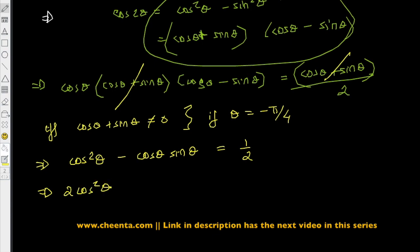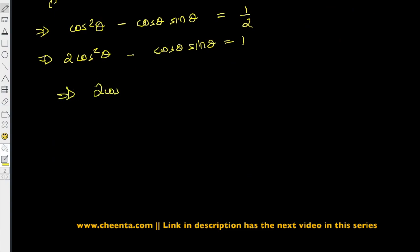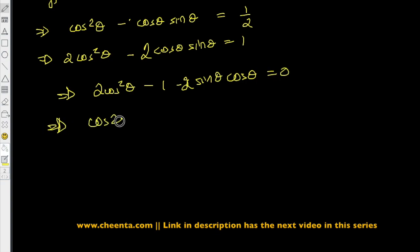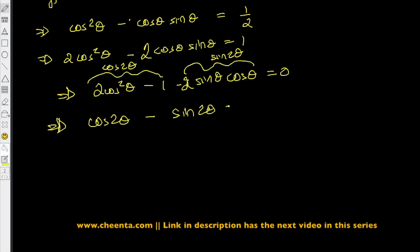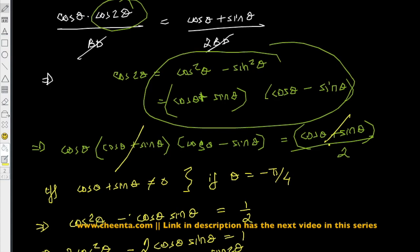Multiplying both sides by 2: 2 cosine squared theta minus 2 sine theta cosine theta equals 1. Bringing the 1 to the other side: (2 cosine squared theta minus 1) minus 2 sine theta cosine theta equals 0. This is cosine 2 theta minus sine 2 theta equals 0, which implies cosine 2 theta equals sine 2 theta, and therefore 2 theta equals pi over 4.